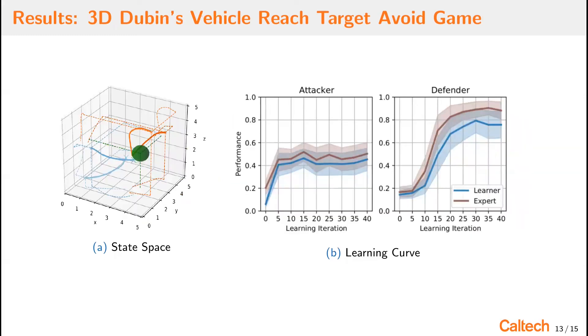We also consider the 3D Dubins vehicle reach target avoid game. So in this example, we changed the state space and action space and transition function to reflect that of the 3D Dubins vehicle, which is an important model for modeling aircraft. We have the state space shown on the left, and we can see the same trends for the learning curves on the right. We have a steady improvement until converged behavior.